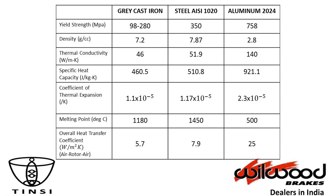Now let us look at the next few properties. The second property is density. Aluminium has the minimum density, and that is the main reason it earns points when selecting a material for any design. People are generally inclined towards aluminium because it reduces weight, and for a brake rotor — which is part of the unsprung mass of the vehicle — you tend to choose aluminium to save weight.